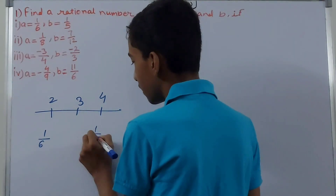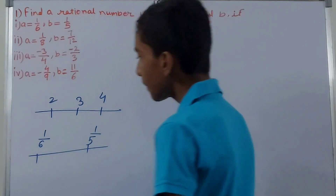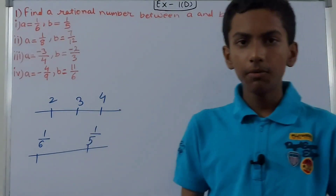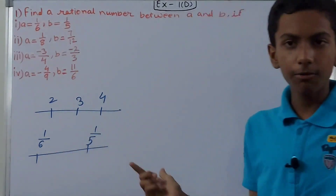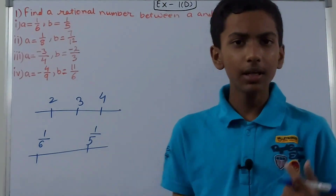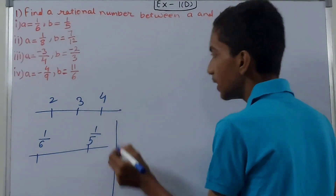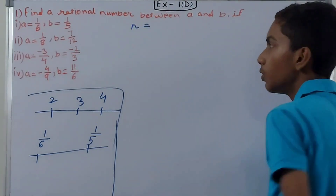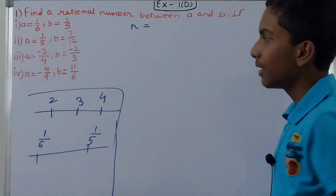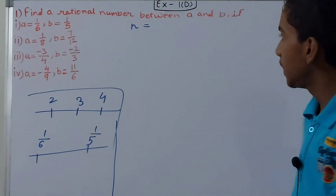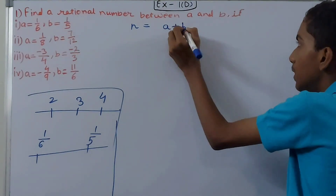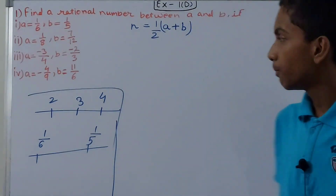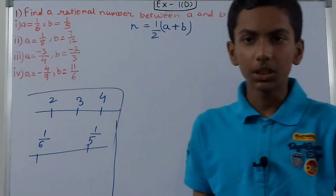For example, if we have 1/6 and 1/5, we need to find a rational number between these two. Between 2 and 4 it was easy, but between 1/6 and 1/5 we don't immediately know what lies in between. There is a quick formula: the new number n is equal to (a + b) multiplied by 1/2, i.e., n = (a + b) / 2. We use this formula to find a number between two rational numbers.